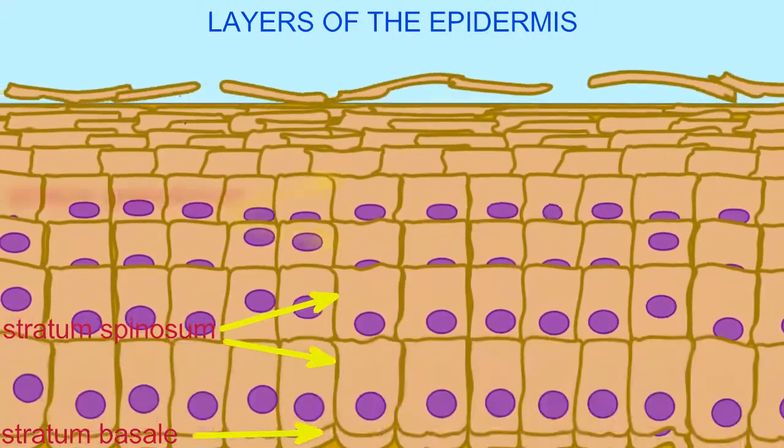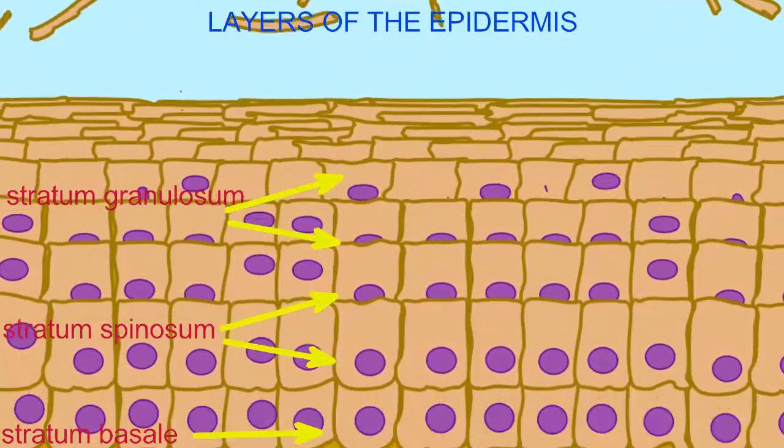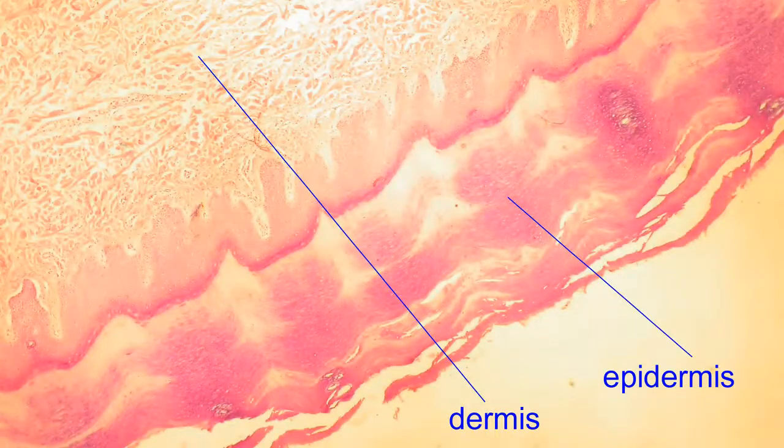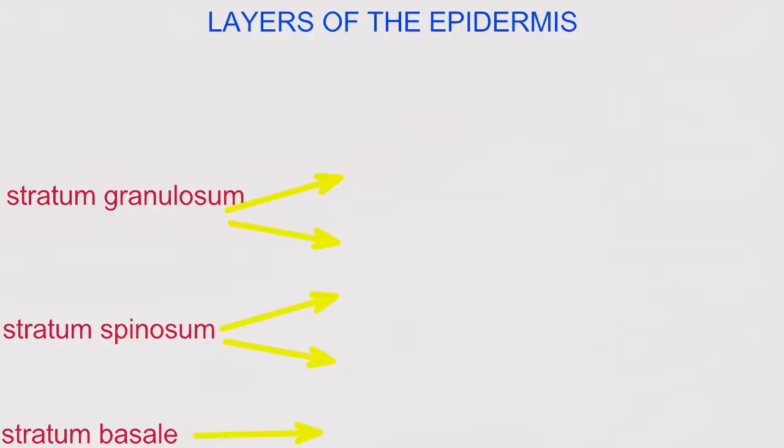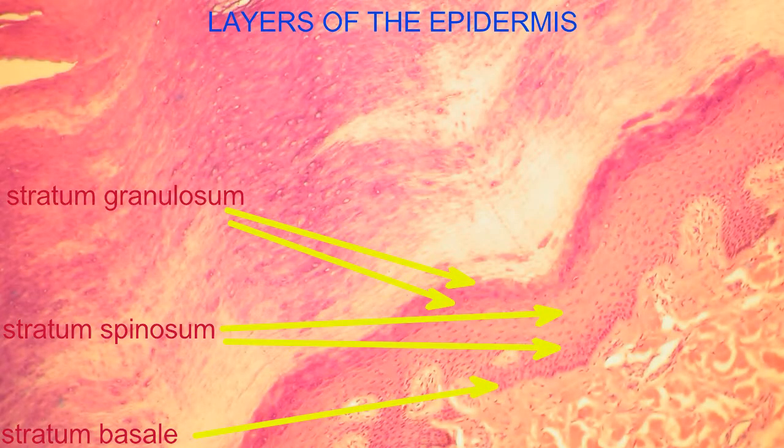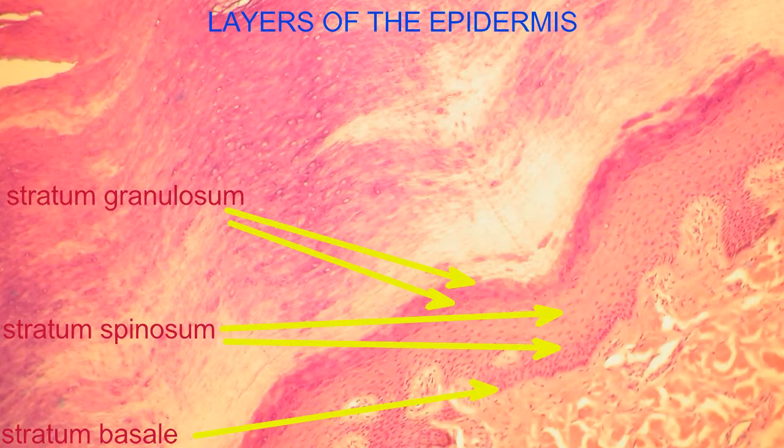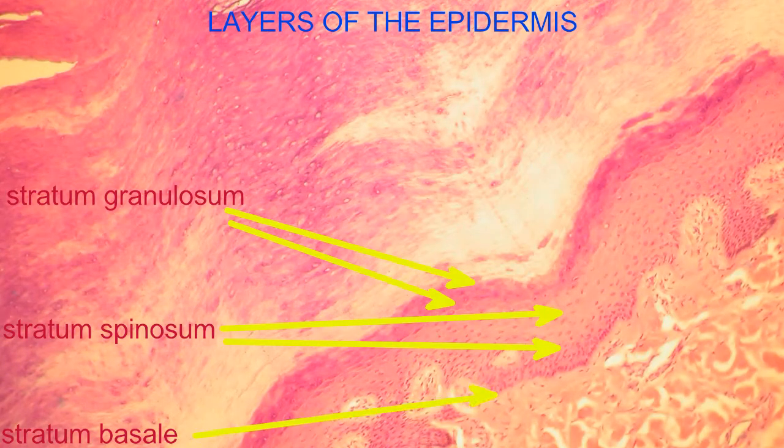In the stratum granulosum, the process of keratinization begins, where cells are beginning to die and have organelles such as their nuclei degenerate as they become flat bags of the protein keratin. At this point, they are too far to obtain nutrients from the blood vessels of the dermis for nutrition.